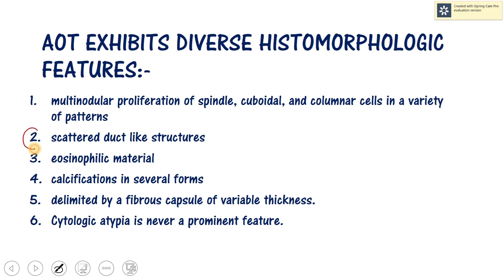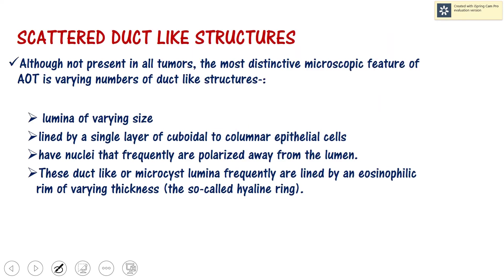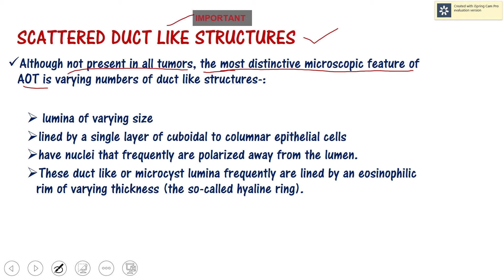The second point is the presence of scattered duct-like structures — an extremely important point. While not present in all AOTs, it is the most distinctive microscopic feature of AOT. These duct-like structures are not real ducts; they are pseudo-ducts, pseudo-glandular structures, or micro-cyst-like structures.